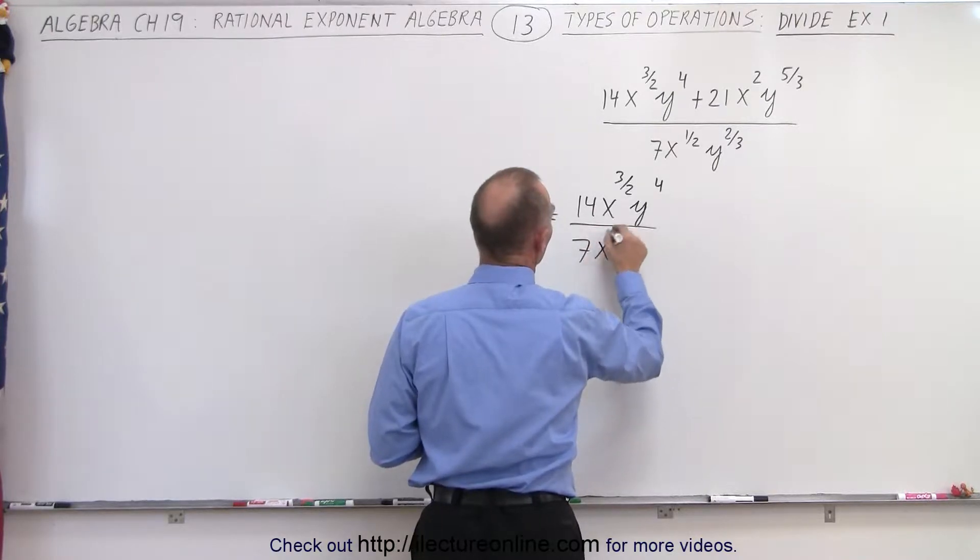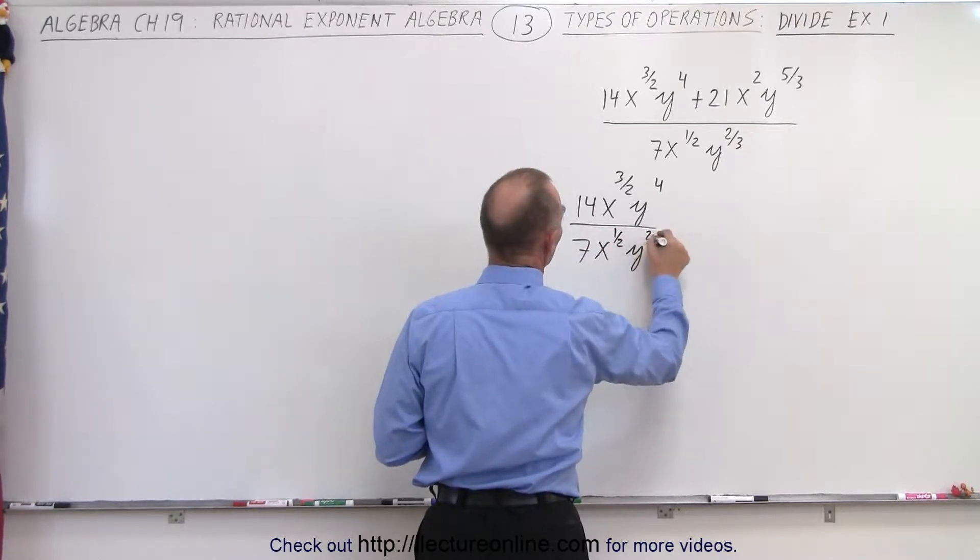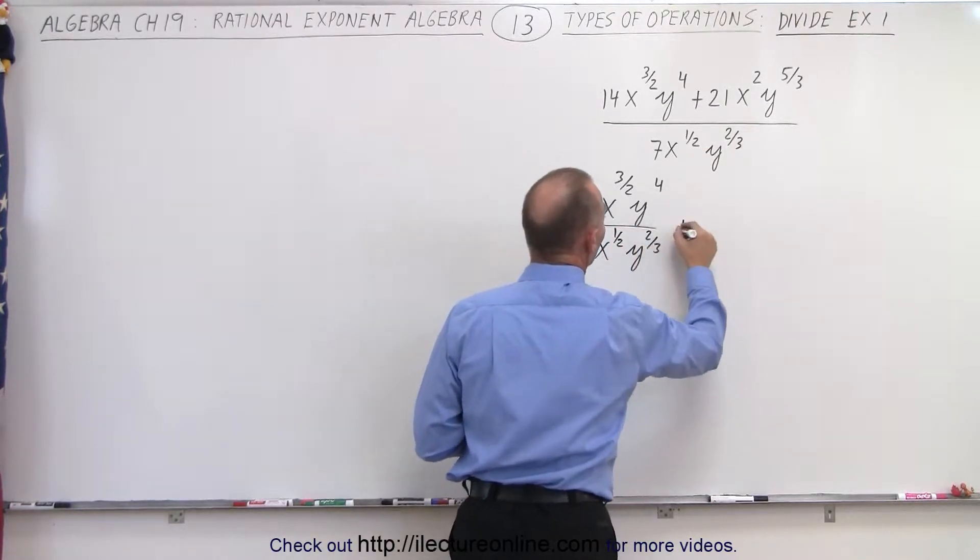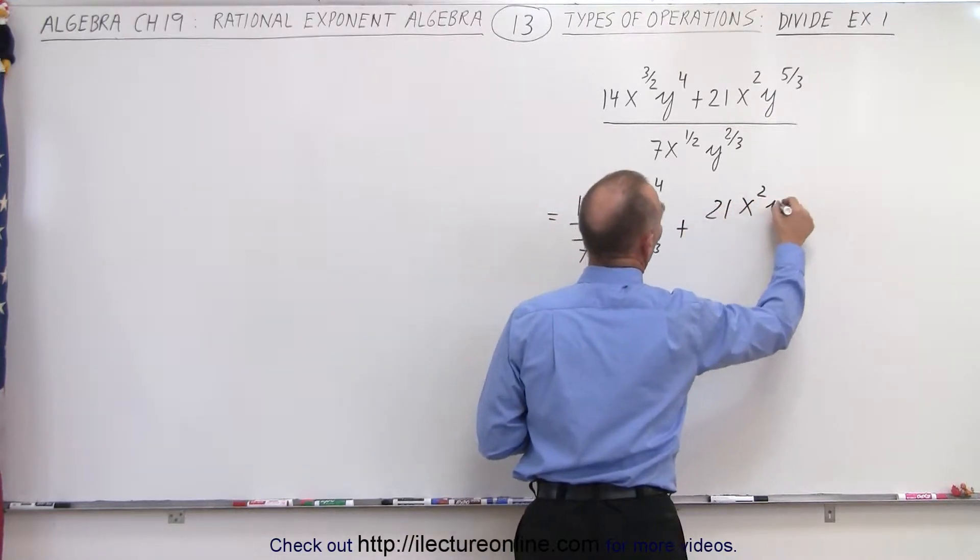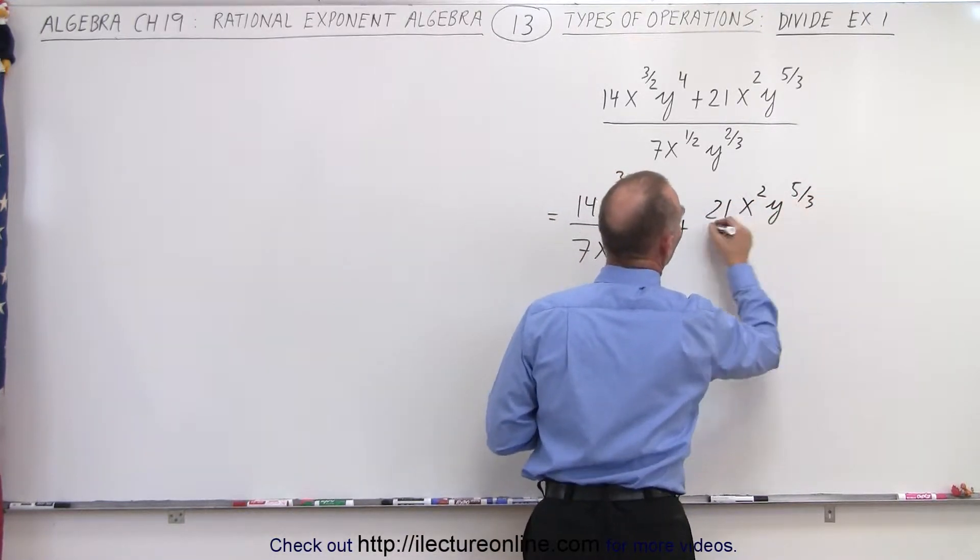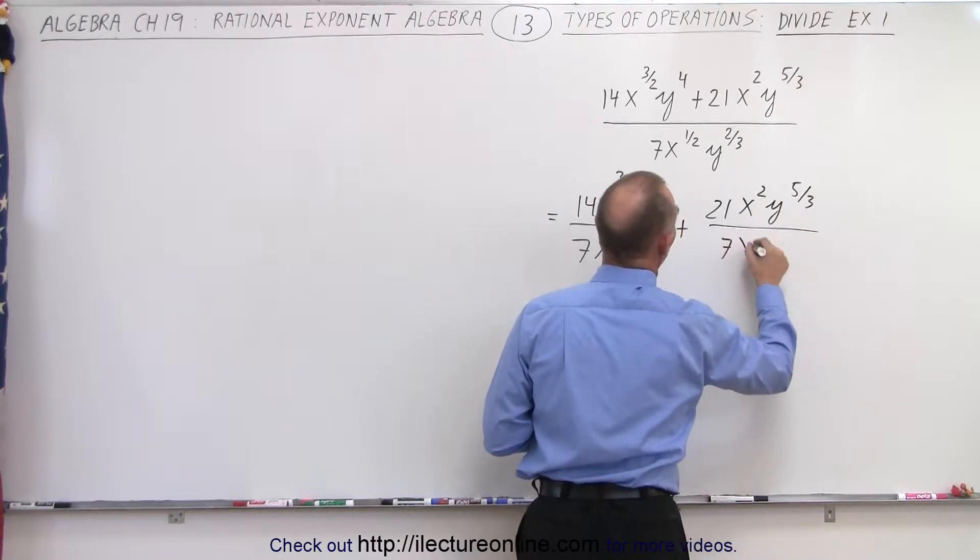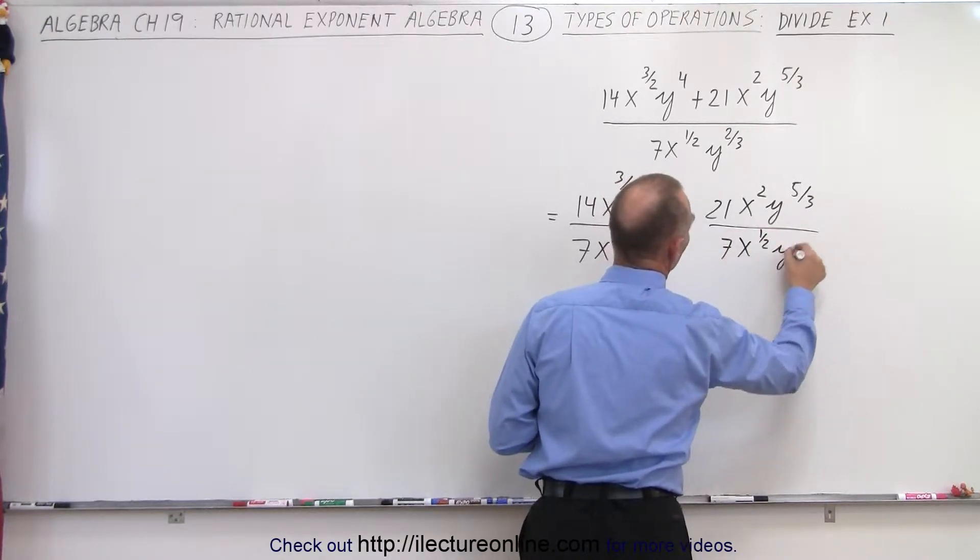as two fractions. So this can be written as 14x^(3/2)y^(4/3) divided by 7x^(1/2)y^(2/3), and then plus 21x²y^(5/3) divided by 7x^(1/2)y^(2/3).